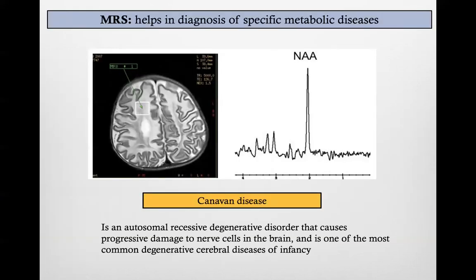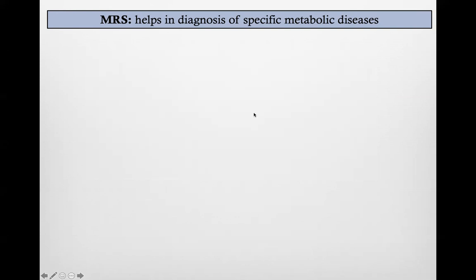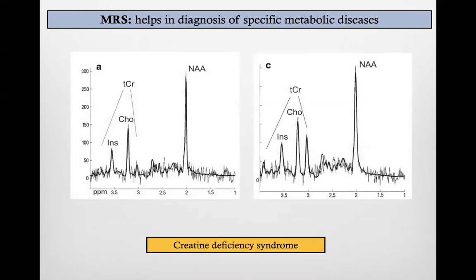We can also use MRS for specific diagnoses. In Canavan disease, a metabolic disorder, there is a sky-high NAA, probably due to characteristic trapping of NAA in these patients. In creatine deficiency syndrome, there is no creatine, but we can use the creatine peak to assess response to treatment. These patients may not show many abnormalities on anatomical brain MRI, but spectroscopy is a very powerful tool.